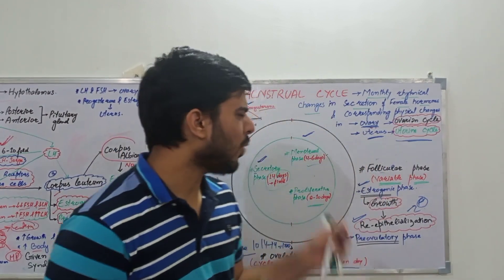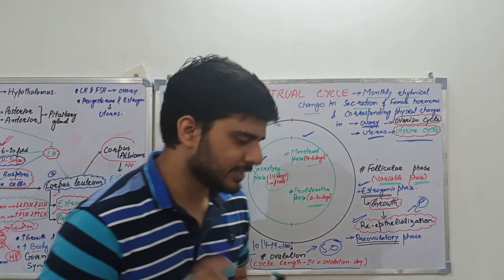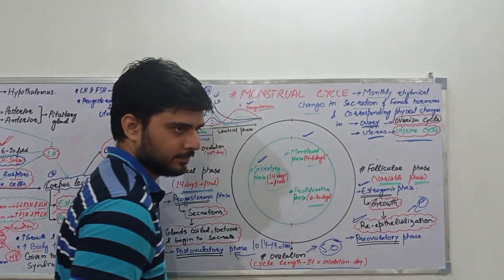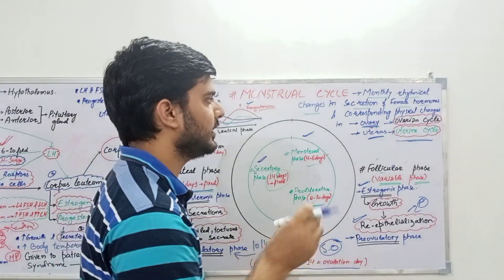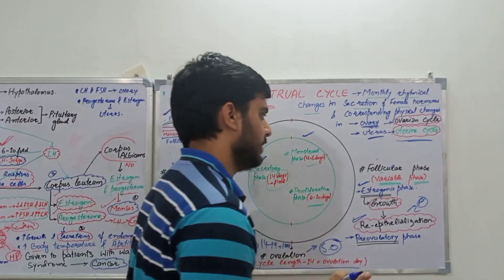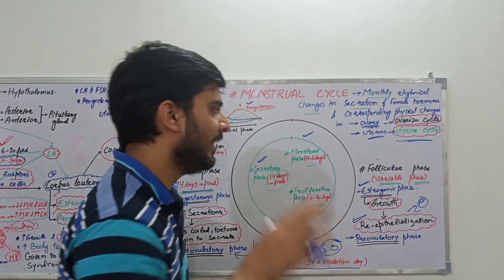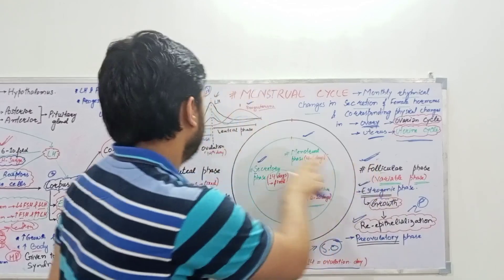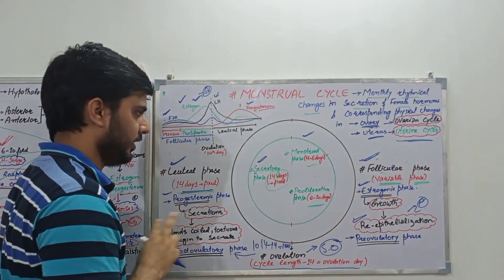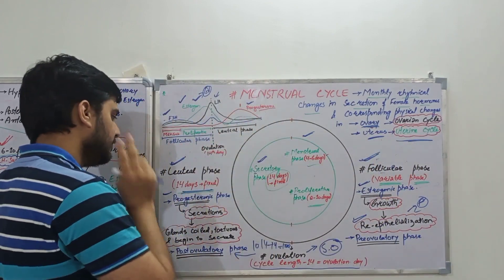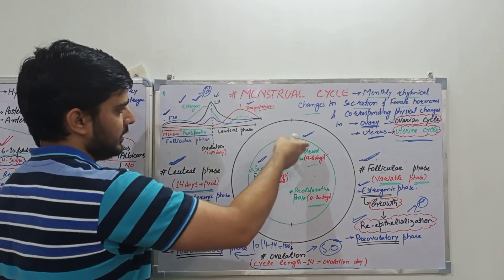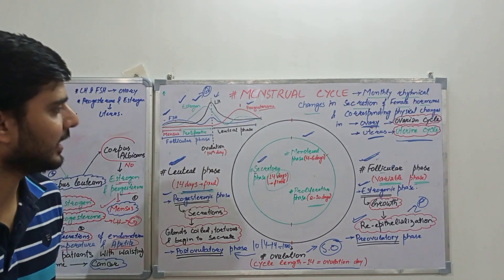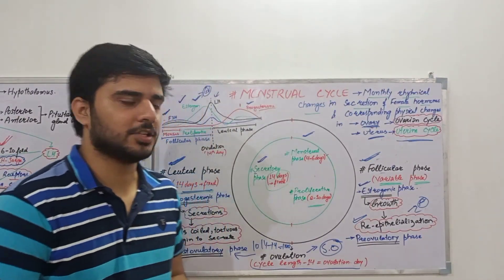After the luteal phase, we observe menstruation because of the withdrawal of both hormones, observable as per-vaginal discharge of blood. That covers everything about the menstrual cycle. If you have any doubts about this chapter, you can ask in the comment section. Thank you everyone and have a nice day.